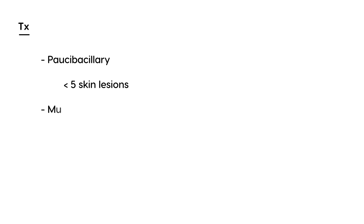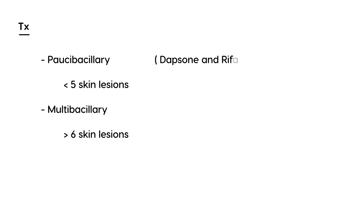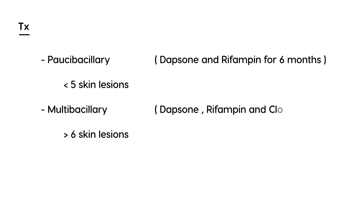In terms of treatment, there are two categories. The first is paucibacillary leprosy, meaning fewer than five skin lesions — treated with dapsone and rifampin for six months. The second and more serious category is multibacillary leprosy, with greater than six skin lesions — treated with dapsone, rifampin, and clofazimine for 12 months.